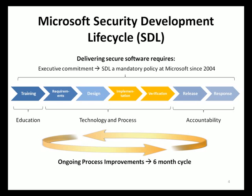In the release phase, the final security review is the major milestone that a Microsoft product team must pass in order to release a product under the SDL. During this meeting, security experts and the development team review all of the activities, mitigations, and security artifacts relevant to the project to ensure that security quality requirements are satisfied. The product team also defines a response plan describing procedures, accountabilities, and contact information in case security vulnerabilities are discovered after the product is operational.